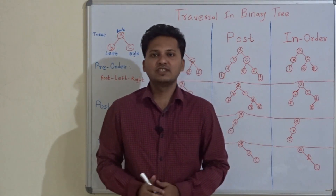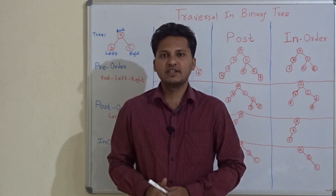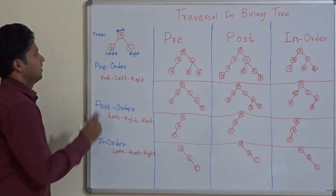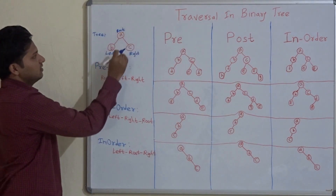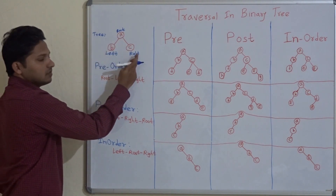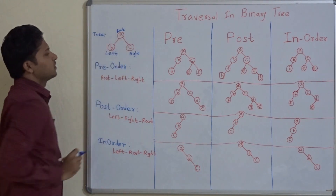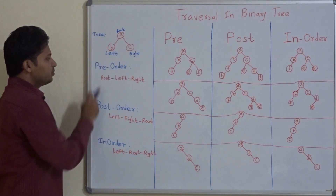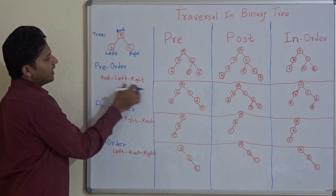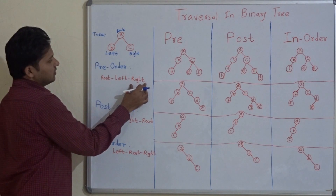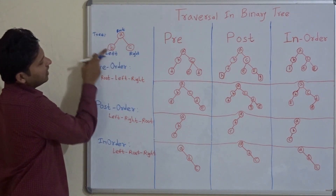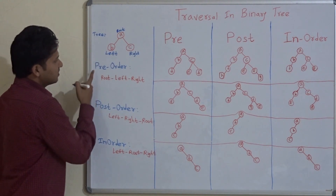Hello friends, today we are going to see the traversals of a binary tree. This is the tree — this is the root, this is the left node, and this is the right node of the root. In pre-order, we first write the root, then the left child, and the right child. In this case, A is the root, B is the left child, and C is the right child.